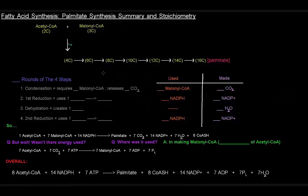In this video, I want to summarize the stoichiometry of palmitate synthesis. The first thing we did was take an acetyl-CoA and a malonyl-CoA, bring them together to make our four-carbon molecule, and that was one round of fatty acid synthesis, or beta reduction.